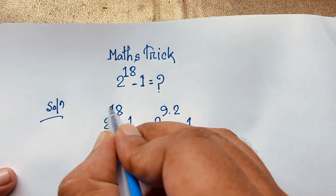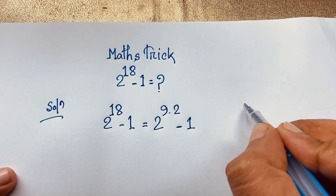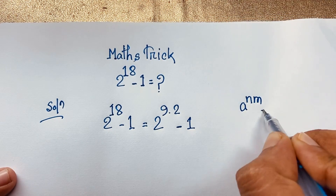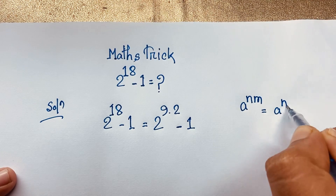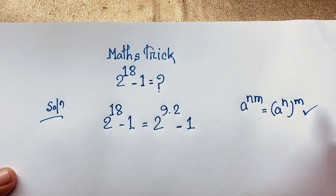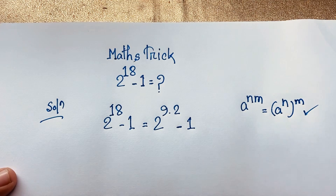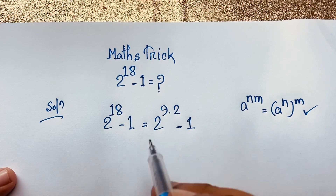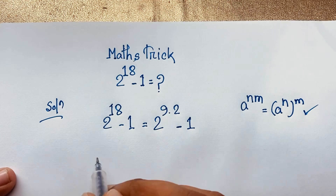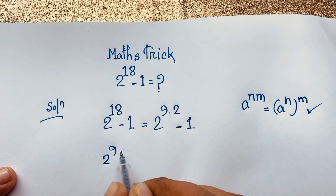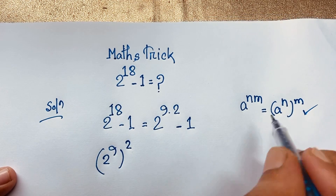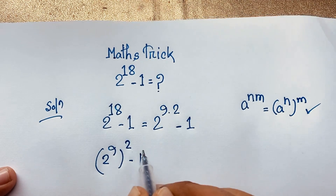Now, at this moment, we know that a to the power n, m — it will be a to the power n, whole to the power m. If I apply this exponential formula, this time you can see it will be 2 to the power 9, times 2. It will be 2 to the power 9, bracket, whole to the power 2.